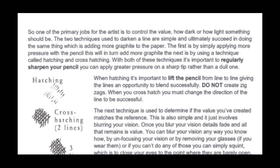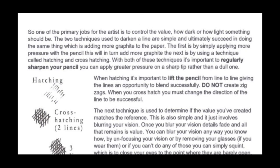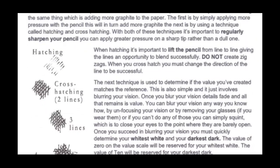Page two of the handout: one of the primary jobs for the artist is to control the value — how dark or how light something should be. The two techniques used to darken a line are simple and ultimately do the same thing, which is adding more graphite to the paper. The first is by simply applying more pressure with the pencil. The next is by using a technique called hatching and cross-hatching. With both of these techniques it's important to regularly sharpen your pencil.